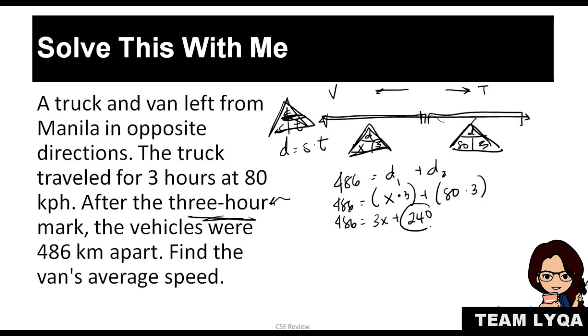Move the 240 to the other side. So 486 minus 240 equals 3X. So we have 246 equals 3X. Divide both sides by 3 to cancel. So 246 divided by 3 gives 82. So the answer is 82 kilometers per hour.